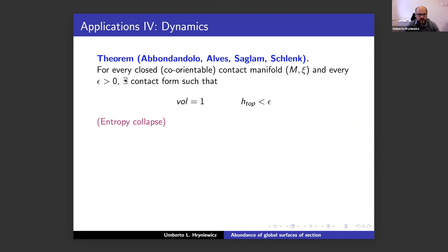There is a very nice result by Alberto Abbondandolo, Marcelo Alves, Murat Saglam, and Felix Schlenk: entropy collapse — meaning in every contact manifold one can find Reeb flows with volume 1 and small topological entropy. Of course if your manifold admits flows with zero entropy there is nothing to say, but there are many manifolds which don't. The proof is based on global surfaces of section.